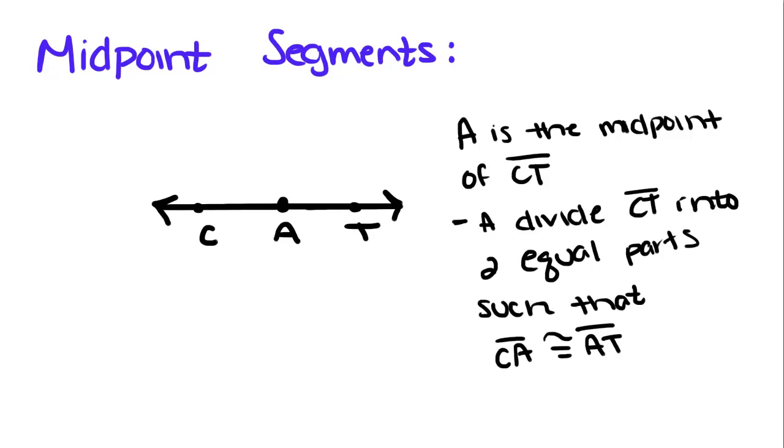So our topic today is the midpoint of the segment. If A is the midpoint of line segment CAT or CT, A divides CT into two equal parts. And equal also means congruent, such that CA is congruent to AT.